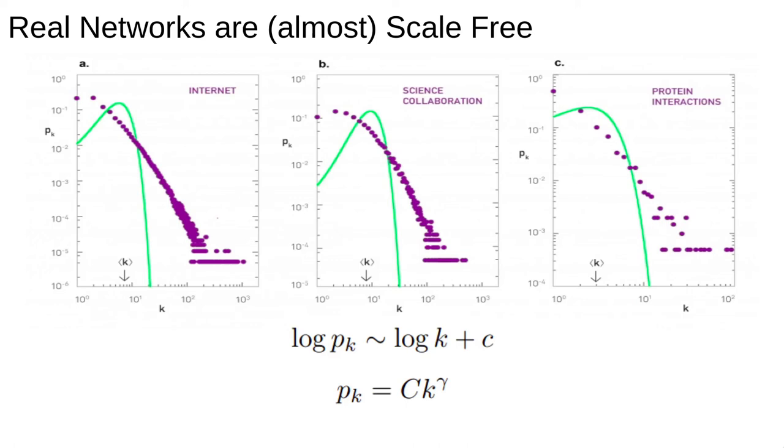This type of degree distribution is often called a scaling law, and networks which have this kind of degree distribution are also called scale-free. The parameter gamma is called a scaling exponent.